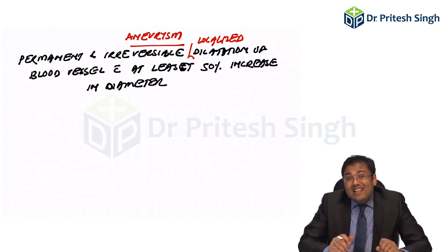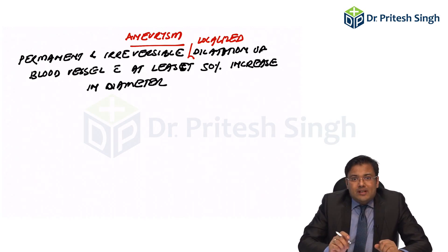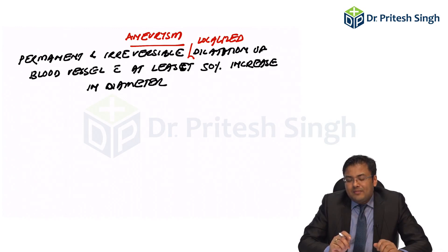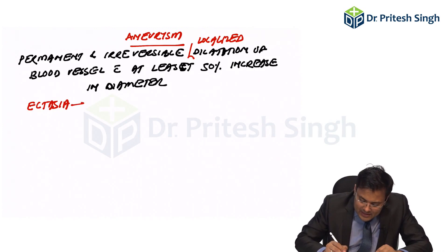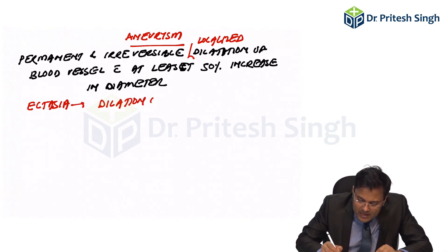There is a second term known as ectasia. In ectasia, dilatation occurs but the increase in diameter is less than 50 percent of the normal diameter. So these two are the basic definitions we will keep using.